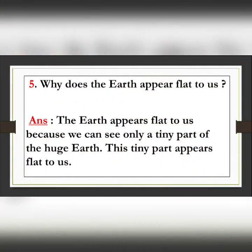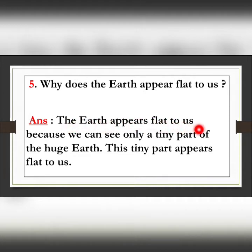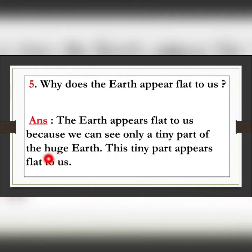Question number D5: Why does the Earth appear flat to us? Answer: The Earth appears flat to us because we can see only a tiny part of the huge Earth, and this tiny part appears flat to us.